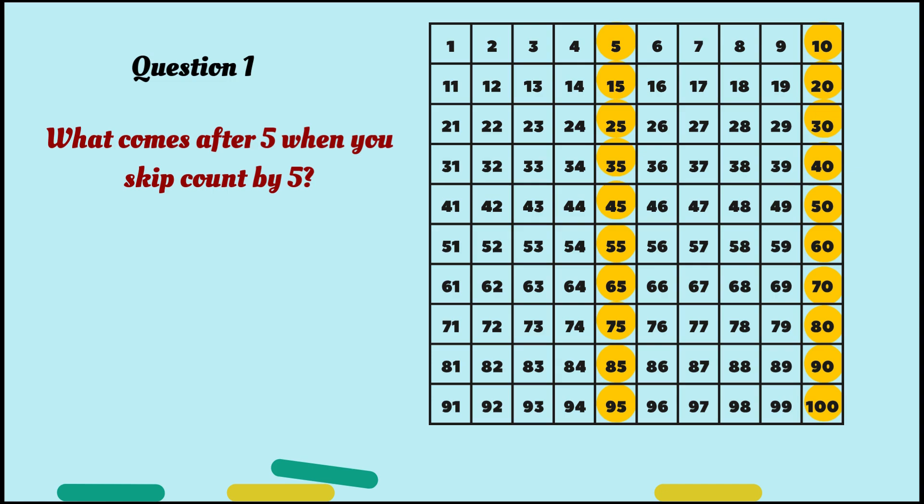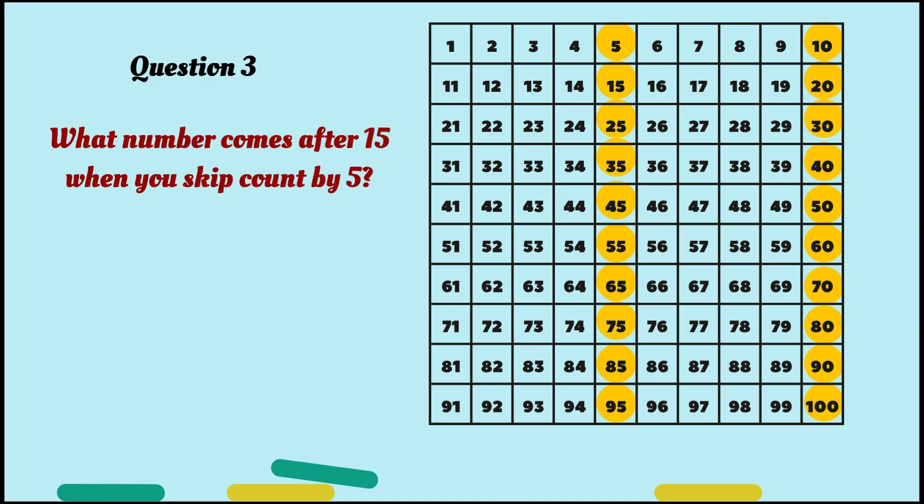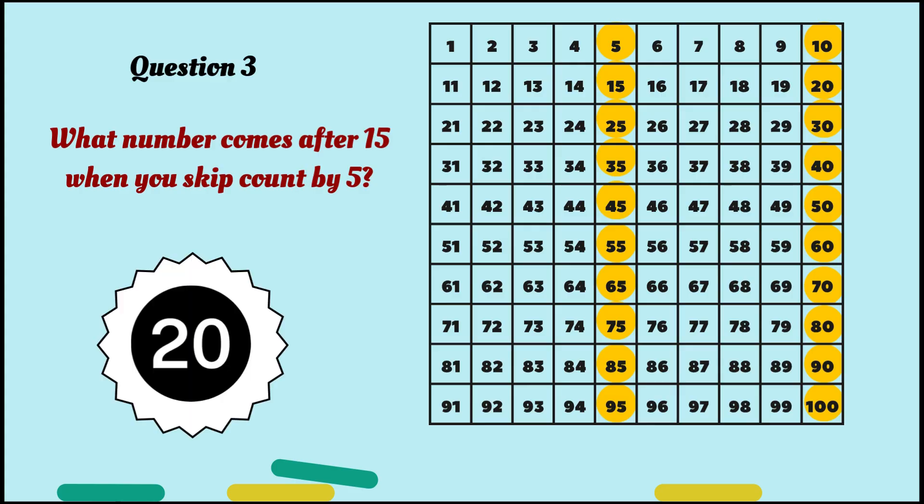First question: What comes after five when you skip count by five? Ten? Yes, it's ten! Question number two: What comes after ten when you skip count by five? If you said fifteen, brilliant! Question number three: What number comes after fifteen when you count by five? Yes, it's twenty.